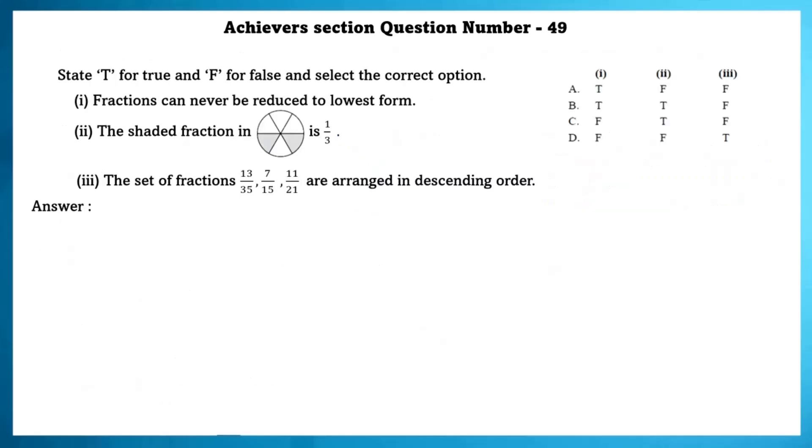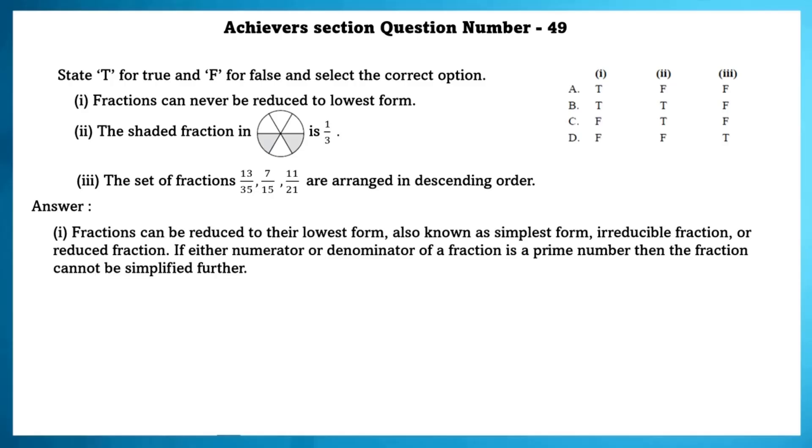Achieve section question number 49. State T for true and F for false and select the correct option. First one, fractions can never be reduced to lowest form. This is false. Fractions can be reduced to their lowest form, also known as simplest form. Irreducible fraction or reduced fraction. If either numerator or denominator of a fraction is a prime number, then the fraction cannot be simplified further.